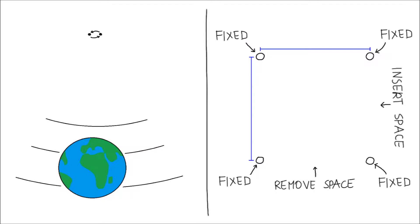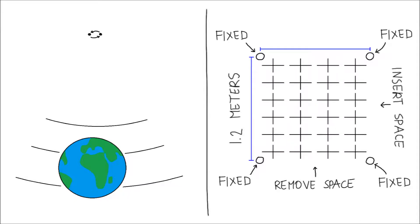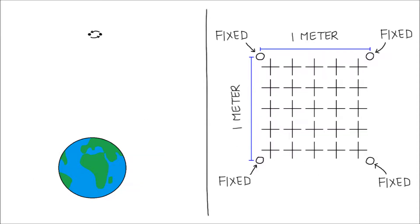The vertices of the square do not really move, it's just that space is being uniformly added between them, and so they find themselves further apart. Or the space between them is being uniformly removed, and so they find themselves closer than before. Once the gravitational wave passes, everything returns to normal.